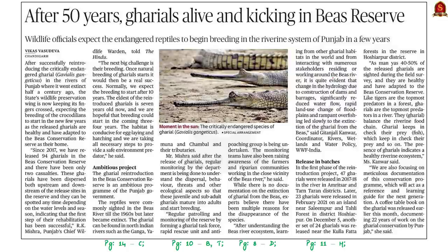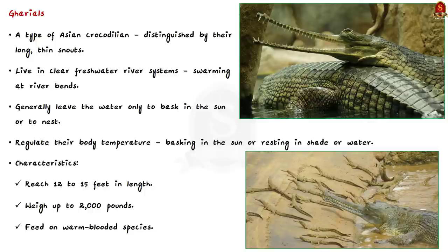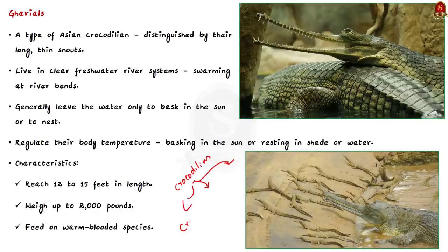This article talks about the gharial reintroduction in the Biyaz Conservation Reserve, an ambitious program of the Punjab government. After successfully reintroducing gharials in the rivers of Punjab where they went extinct half a century ago, the state's wildlife preservation wing is keeping its fingers crossed — the released gharials are healthy and have adapted to the Biyaz Conservation Reserve as their home. The state expects breeding to start in the next few years. In this context, we will learn about the habitat of gharials, their protection status, places where they can be found in India, and the threats faced by their population. First, understand that gharials are different from crocodiles and alligators — all three belong to different families but can be termed crocodilians, referring to members of family Crocodylidae, family Alligatoridae, and family Gavialidae.